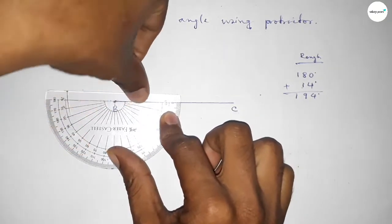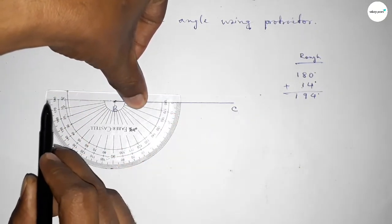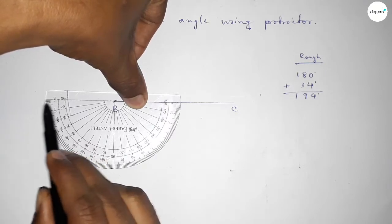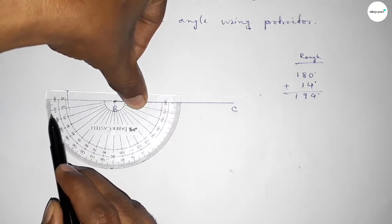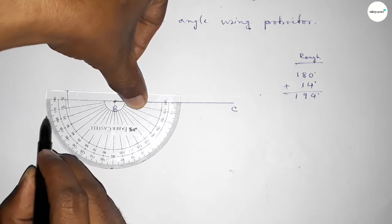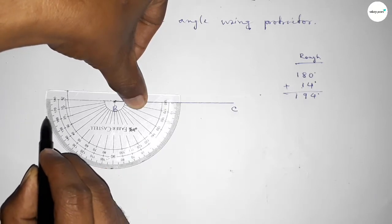Counting extra 14 degrees. So this is 180 and also 0. So 0, 10, 11, 12, 13, 14. By adding extra 14-degree angle with 180 degrees, we can get a 194-degree angle.